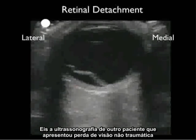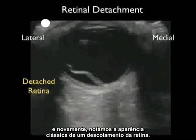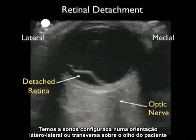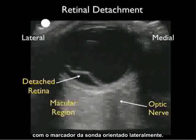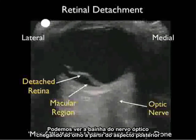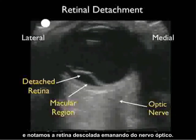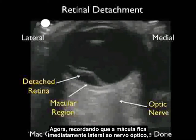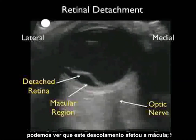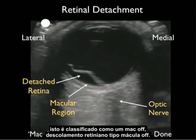Here's the ultrasound from another patient who presented with non-traumatic loss of vision, and again we note the classic appearance of a retinal detachment. We have the probe in a transverse orientation over the patient's eye with the probe marker oriented lateral. We can see the optic nerve sheath coming up from the posterior aspect into the eye and the detached retina emanating off from the optic nerve. Recalling that the macula lies just lateral to the optic nerve, we can see that this detachment has affected the macula — classified as a mac-off or macular-off retinal detachment.